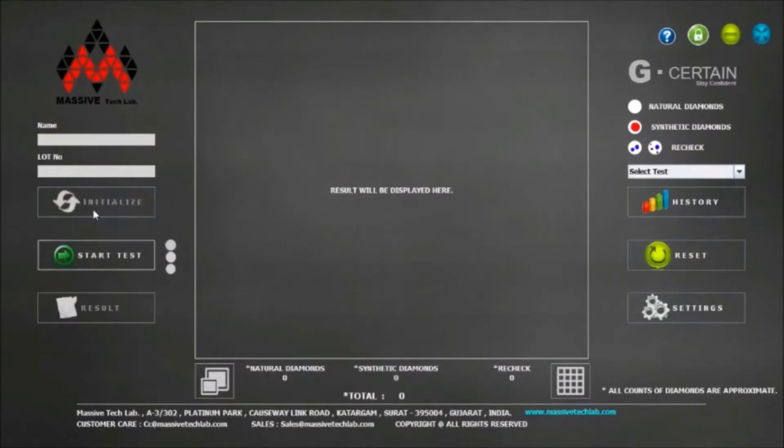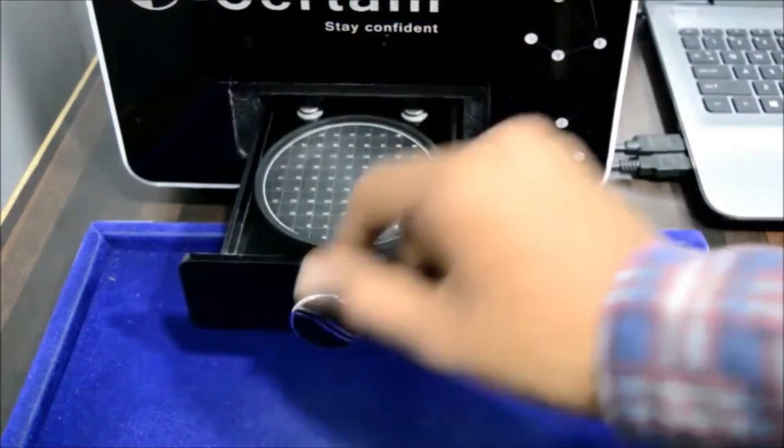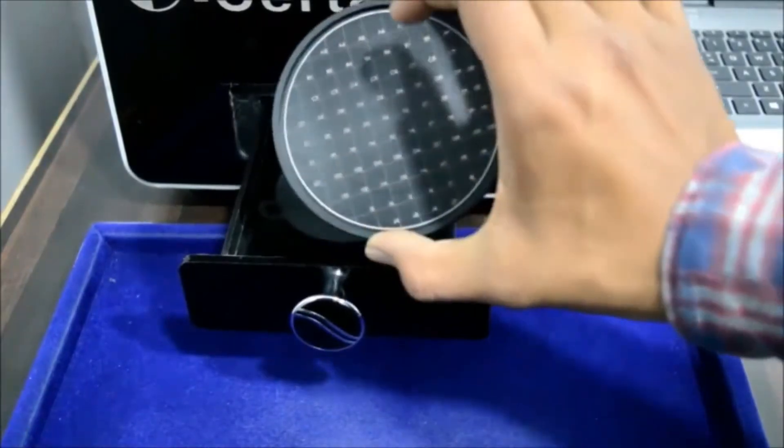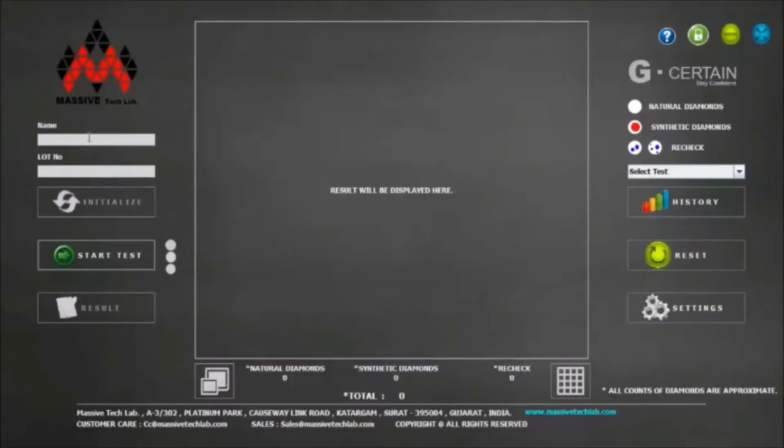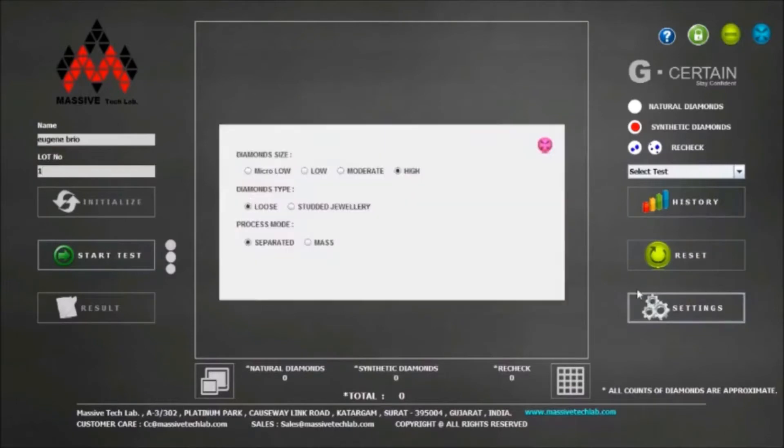Arrange diamonds in circular tray. In software, add the name and lot number in text box provided below logo of Massive Tech Lab. This naming and lot number will be helpful in searching result history which can be useful afterwards.